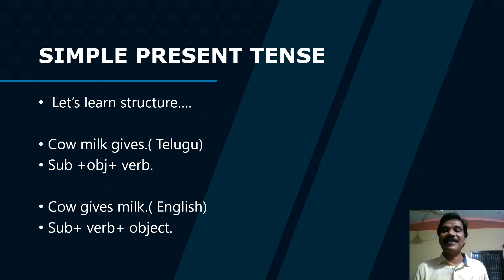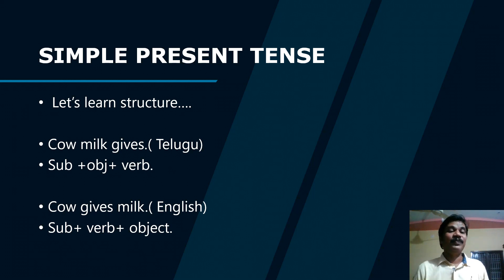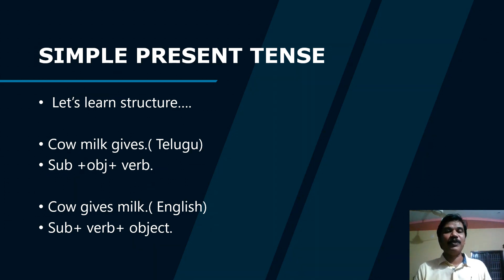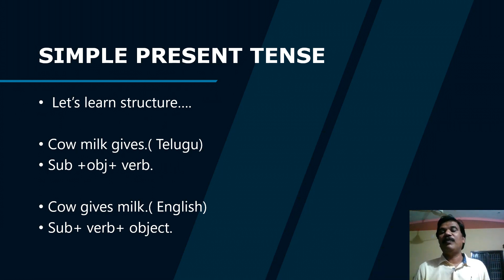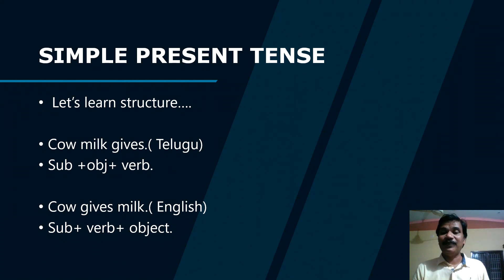Structure is nothing but the pattern of writing a sentence. Every language has its own entity. We cannot speak and write English as Telugu or Telugu as English. For example, in Telugu style the order is subject-object-verb, meaning 'cow milk gives.' See the difference — there is a world of difference between Telugu and English. When you want to speak or write English, follow the English structure and don't mix up these two.